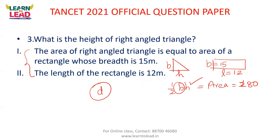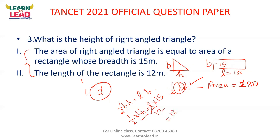Next: what is the height of a right angle triangle, given that the area of the right angle triangle equals the area of a rectangle whose breadth is 40 metres and length is 12 metres? Area of rectangle is length times breadth. Area of right angle triangle is half base times height. So half BH equals L into B. Substituting length 12, area equals 18. So half BH equals 18, but base and height individually are not known.